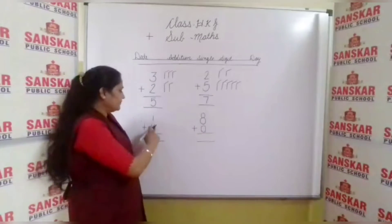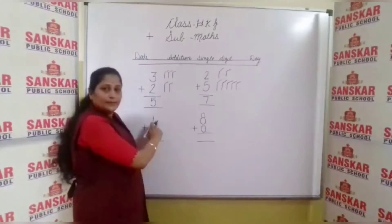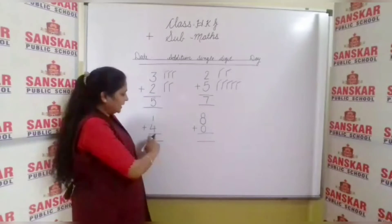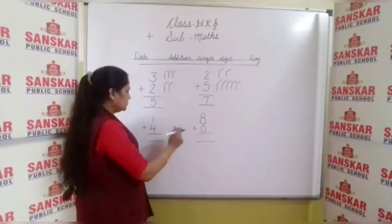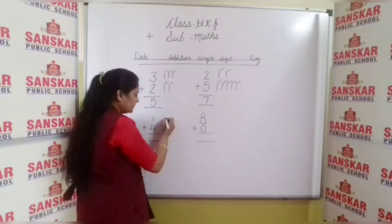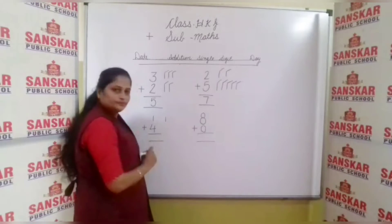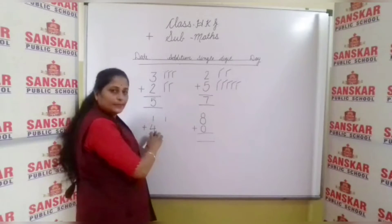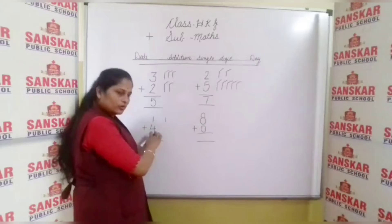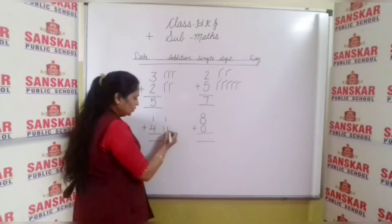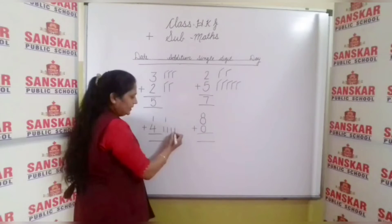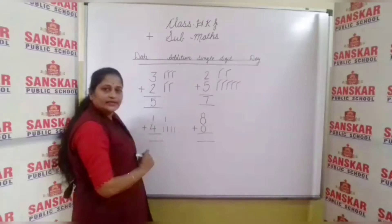Now next is number one and number four. So first of all, one line. Next is number four, so we have to make one, two, three, and four lines.